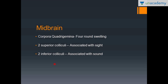Coming to the midbrain: the midbrain consists of mainly four round swellings arranged in the form of a cross, known as corpora quadrigemina. This is an important part of the midbrain commonly asked as MCQs. Two of them are superior and two are inferior — the superior ones are called the superior colliculi, which are associated with the sense of vision, and the two inferior colliculi are associated with sound.